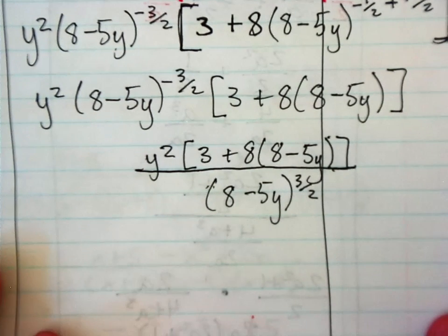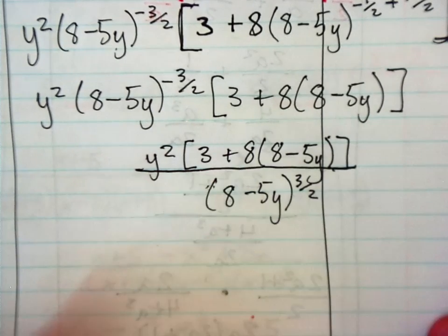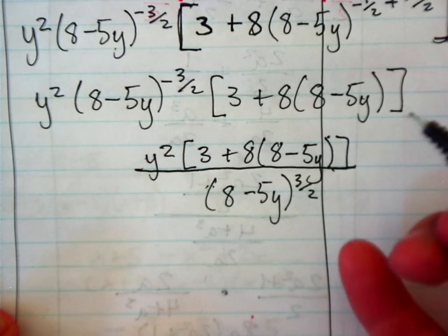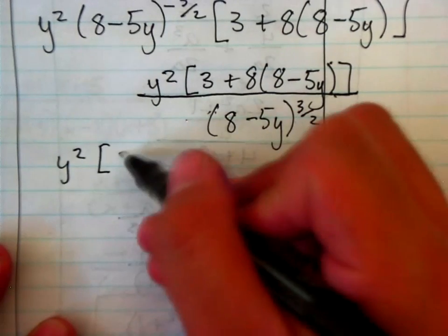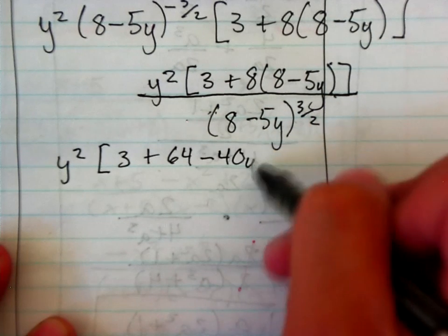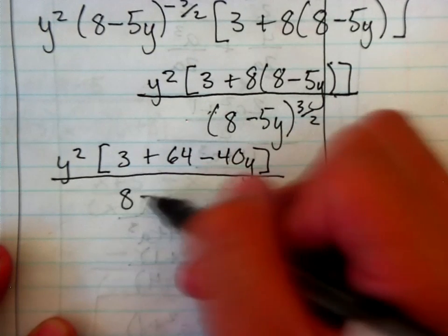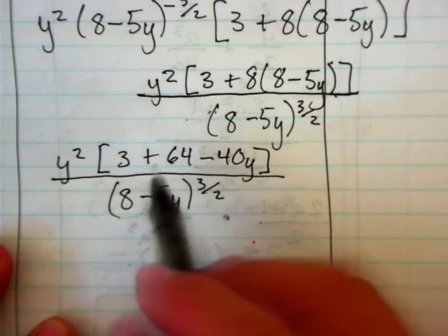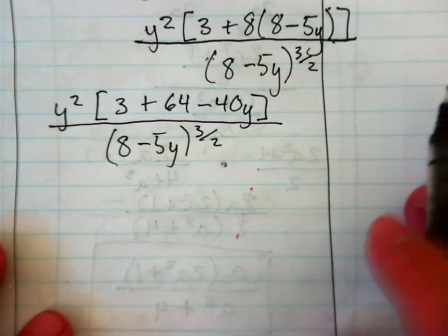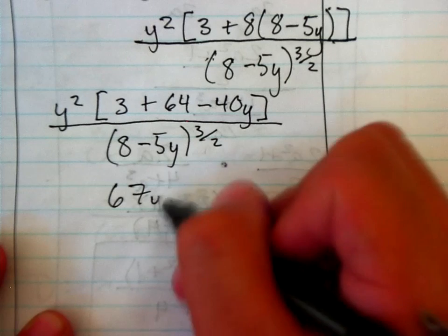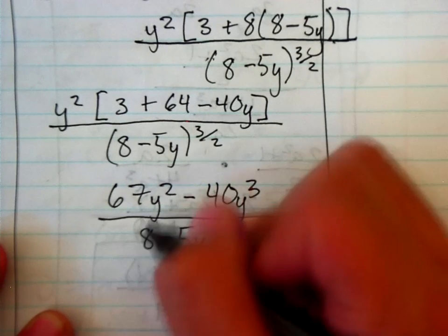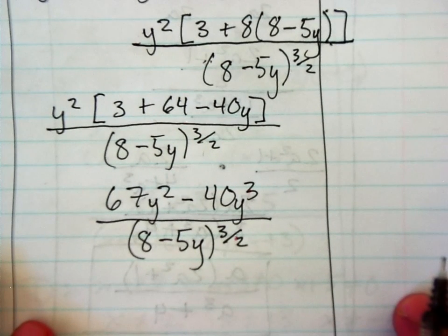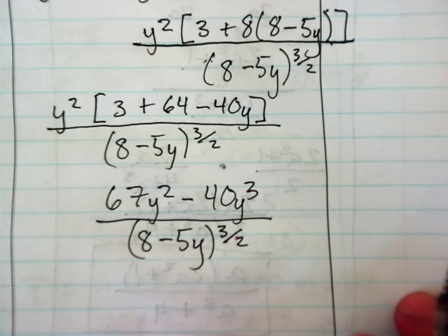Okay? At this point, it looks like we're done. However, I'm just going to go ahead and distribute everything and make sure I collect like terms at the top to make sure that there's nothing else that I could factor out. So, let me move back over here. I have y squared. Simplifying on the inside, I get 3 plus 64 minus 40y. This is all over 8 minus 5y to the 3 halves still. So, then I'm going to collect like terms and also distribute the y squared. So, that's going to be 67y squared minus 40y cubed all over 8 minus 5y to the 3 halves power. Okay? Honestly, at this point, it doesn't look like there's going to be any factors that cancel each other out. So, this is as simple as we can get. So, I'm going to call this my final answer. And that's pretty much how you work with negative exponents.